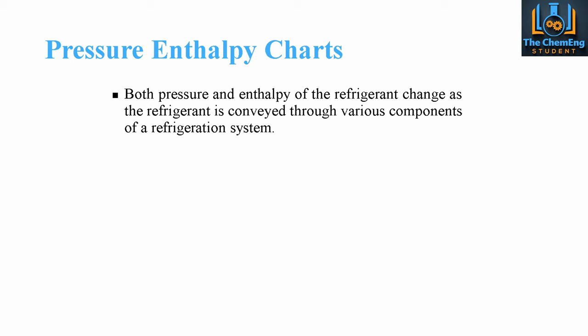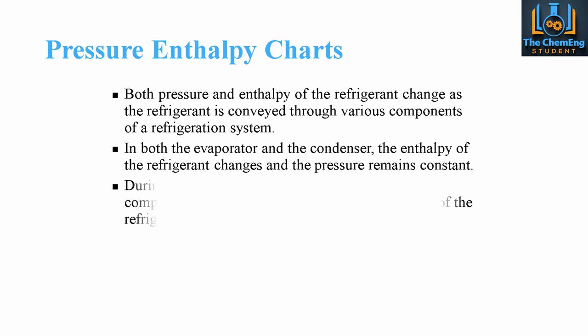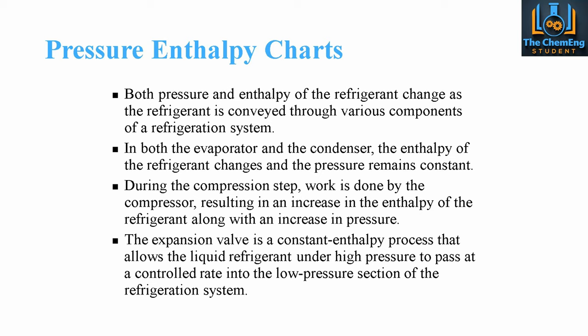We're going to consider the refrigeration cycles and look at the pressure-enthalpy data for different types of refrigerants. In both the evaporator and the condenser, the enthalpy of the refrigerant will change while the pressure remains constant. During the compression step, work is done by the compressor, resulting in an increase in the enthalpy along with an increase in the pressure. The expansion valve is a constant entropy process that allows the liquid refrigerant under high pressure to pass through and become low pressure within the refrigerant system.